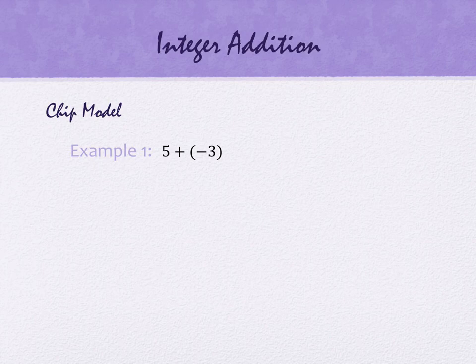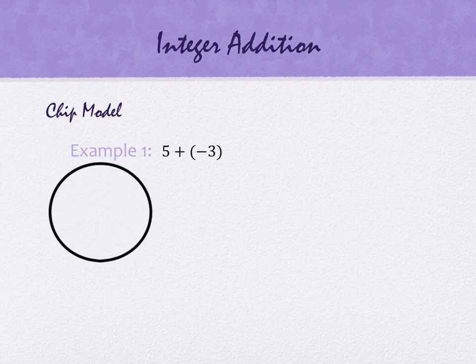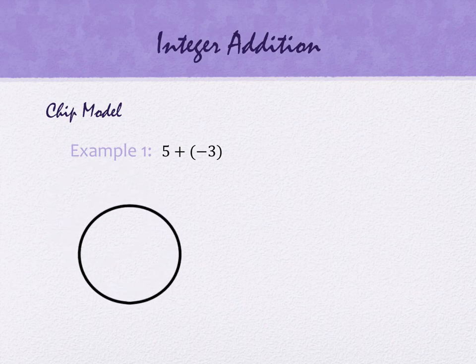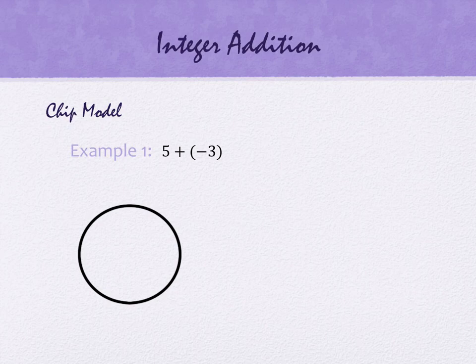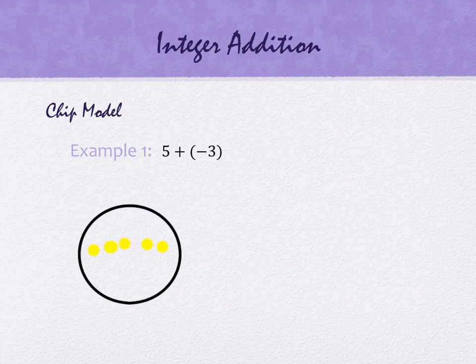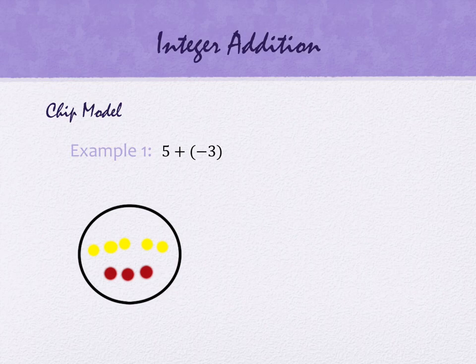So when we're working with these, we're taking a look at numbers like 5 plus negative 3. Your writing surface area is usually drawn as a circle. You're going to put 5 positive chips down — let your paper represent my circle. Then you're going to have 3 negative chips. And then what we do is we pair things up into something called a zero pair.